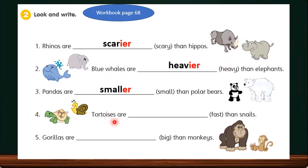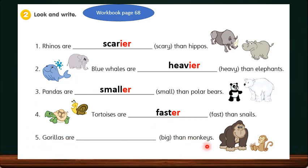Number 4: Tortoises are ___ than snails. Same as small, the word fast does not end with -y, so we can simply add -er at the end, and it becomes faster. Number 5: Gorillas are ___ than monkeys. When we change the adjective big to its comparative form, it becomes bigger — B-I-G-G-E-R.